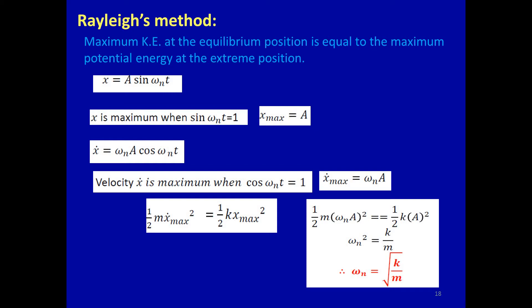If we differentiate x = A sin(ω_n t) with respect to time, we get the velocity component ẋ = ω_n A cos(ω_n t). The velocity ẋ is maximum when cos(ω_n t) = 1, so ẋ_max = ω_n A. Setting maximum kinetic energy equal to maximum potential energy: ½m(ẋ_max)² = ½k(x_max)², and equating both equations gives the final result.